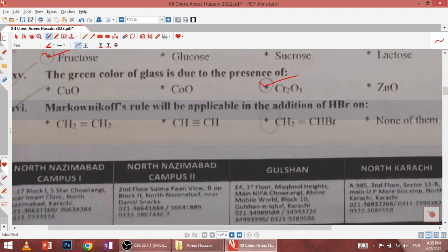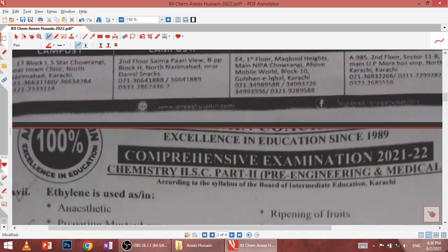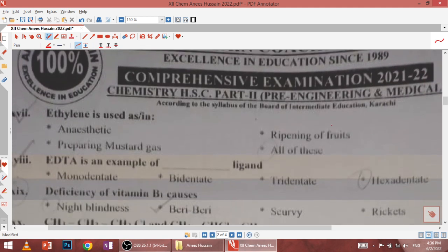Sixteenth, Markovnikov's rule will be applicable in the addition of HBr on CH2-CHBR, because the molecule must be asymmetrical. If we have asymmetrical alkene, then Markovnikov's addition rules apply. Seventeenth, ethylene is used in anesthetic, ripening of fruits, and preparing mustard gas.